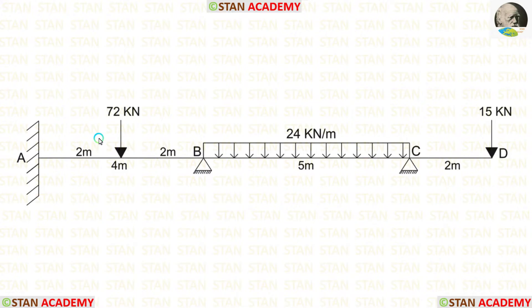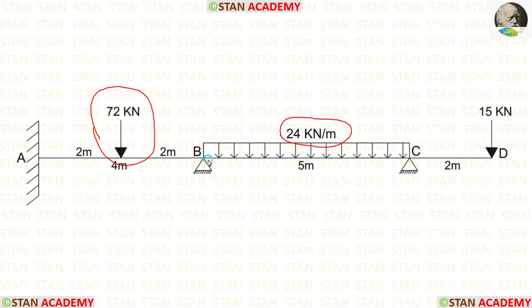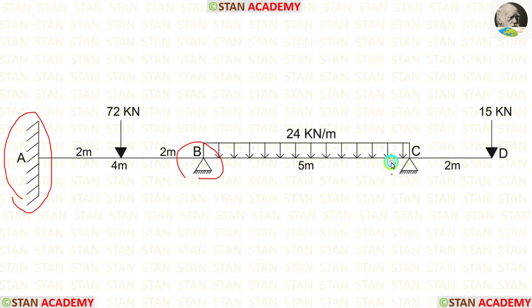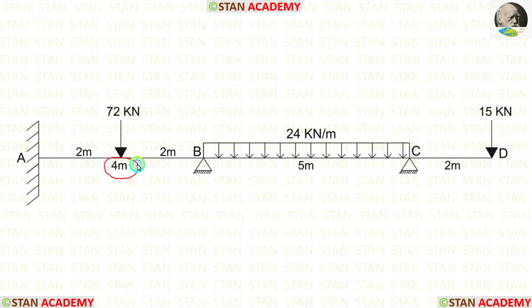In span AB, there is a point load of 72 kN acting at the center. In span BC, there is a uniformly distributed load of 24 kN per meter acting for the full span. In the overhanging span CD, there is a point load of 15 kN acting at point D. Point A has a fixed support, and points B and C have hinged supports. Span AB is 4 meters, span BC is 5 meters, and the overhanging span CD is 2 meters long.